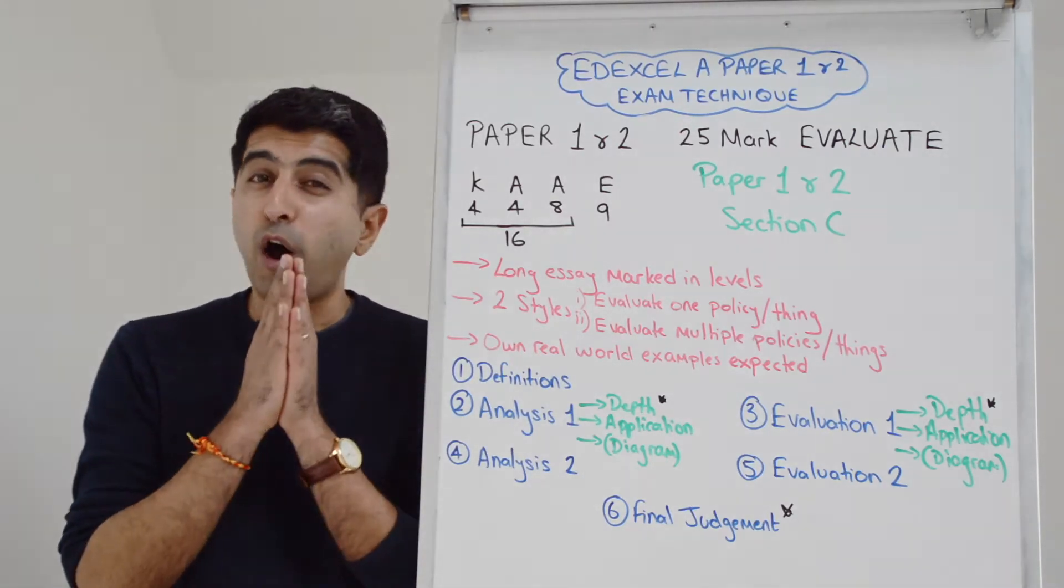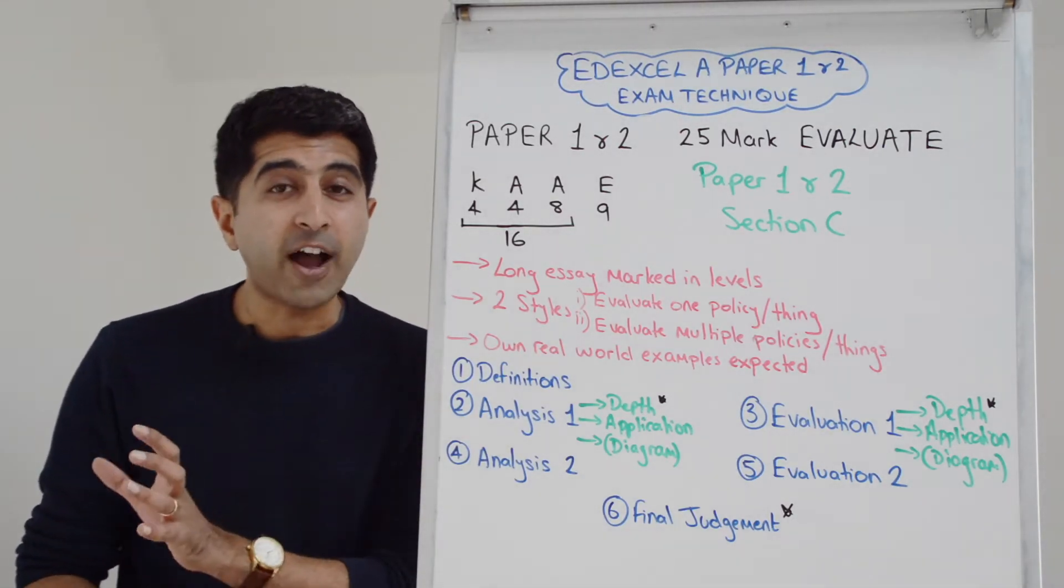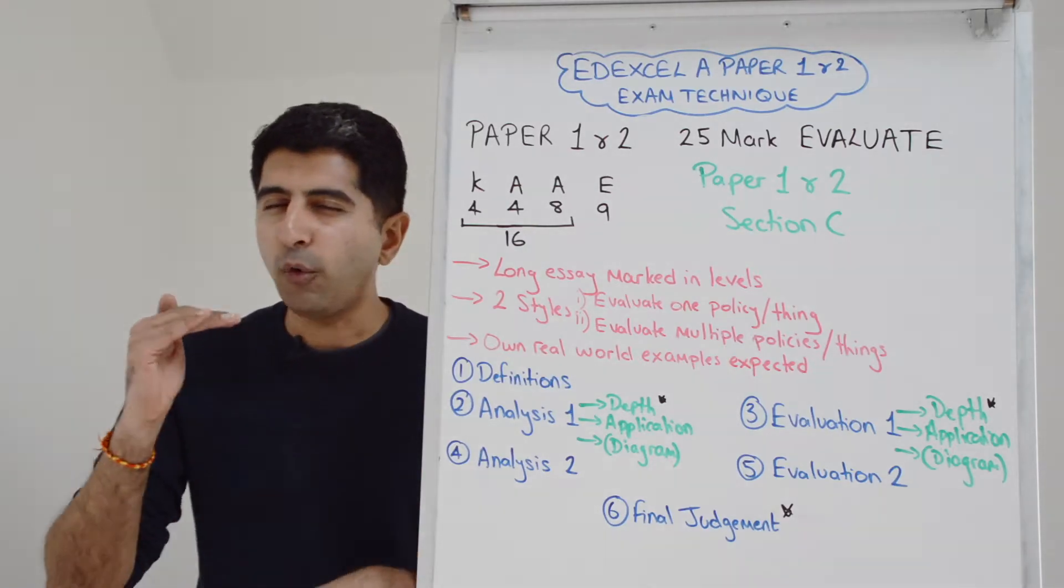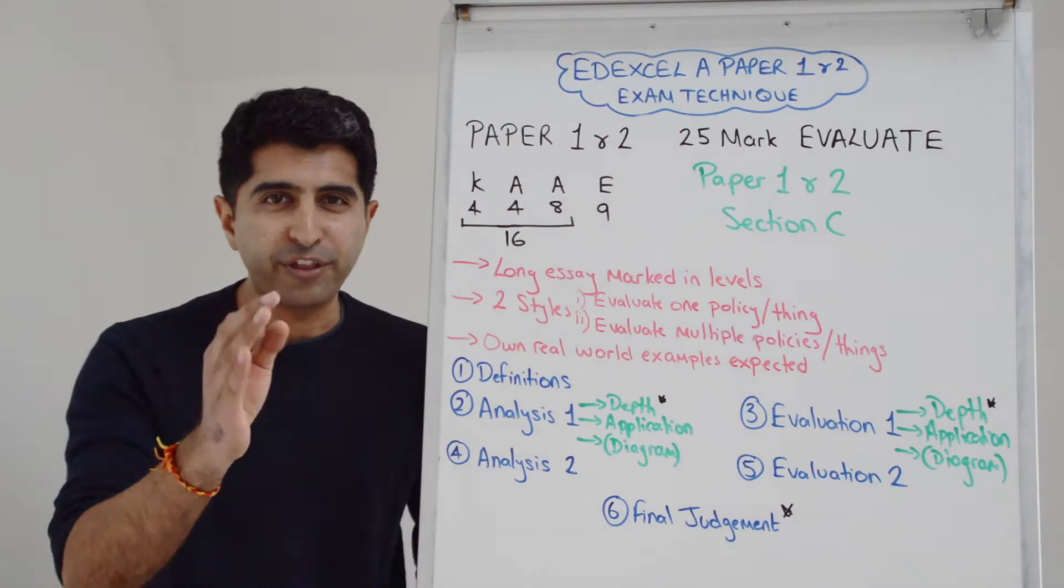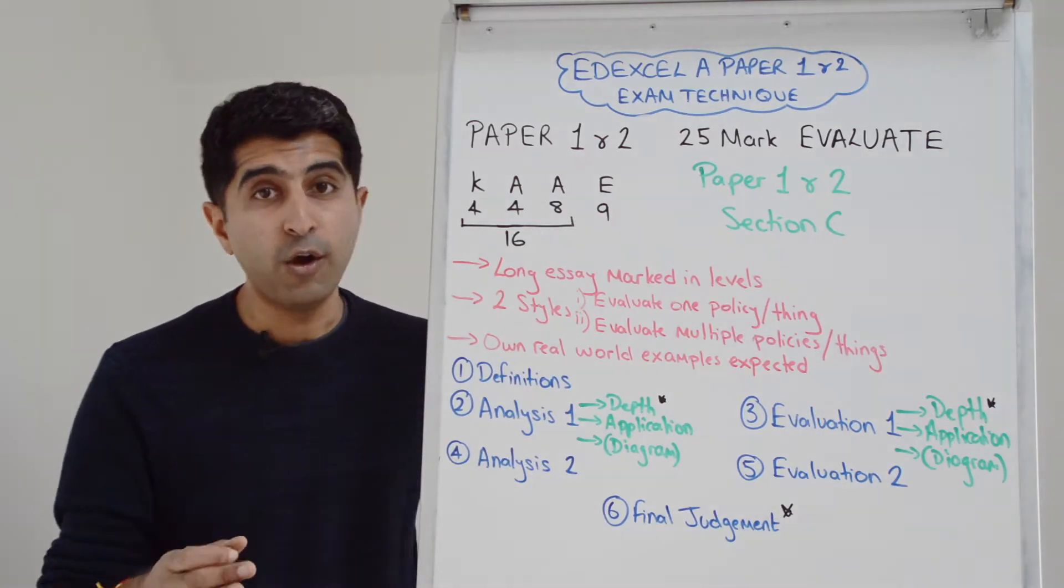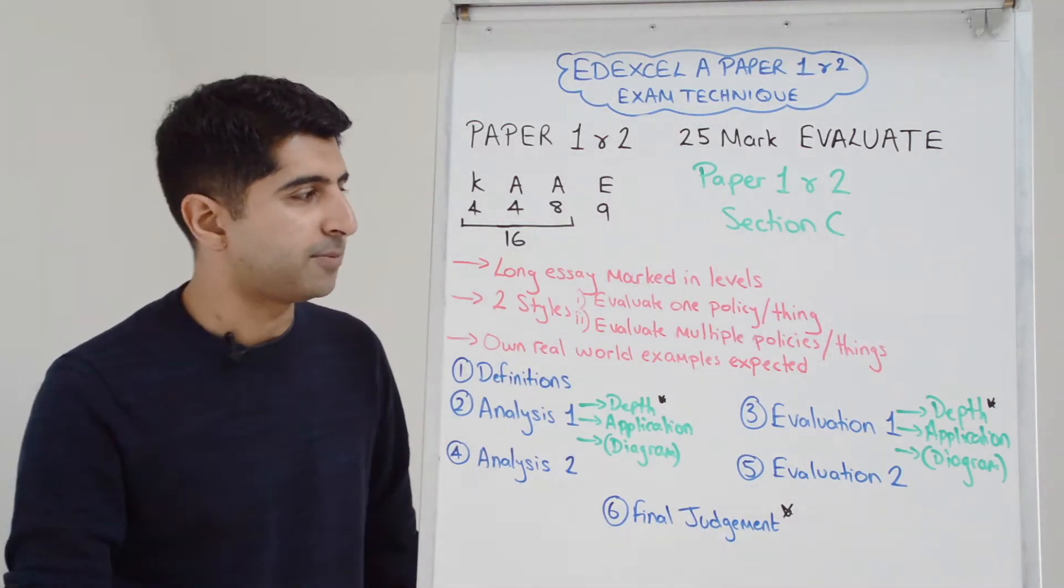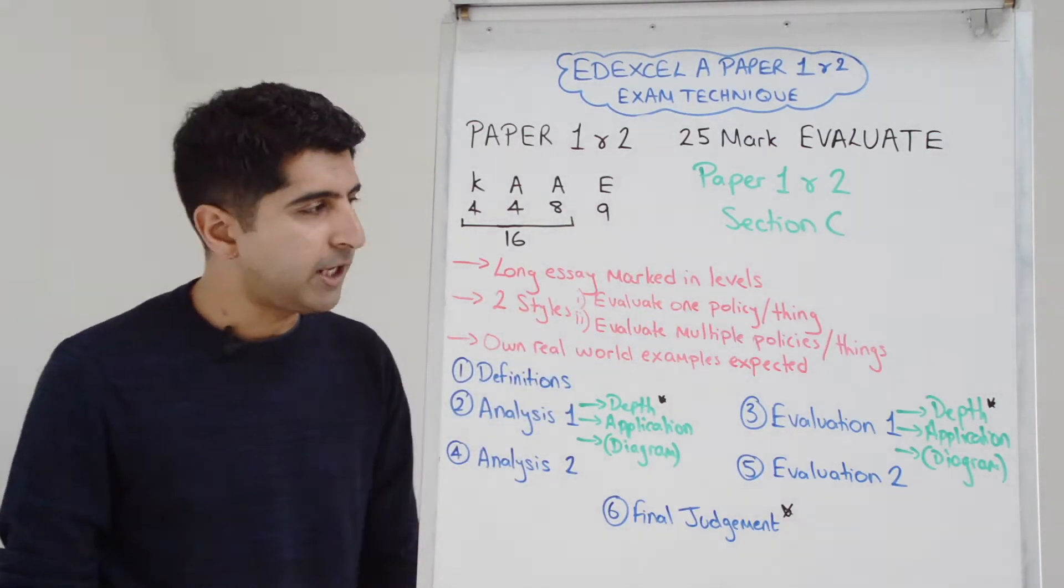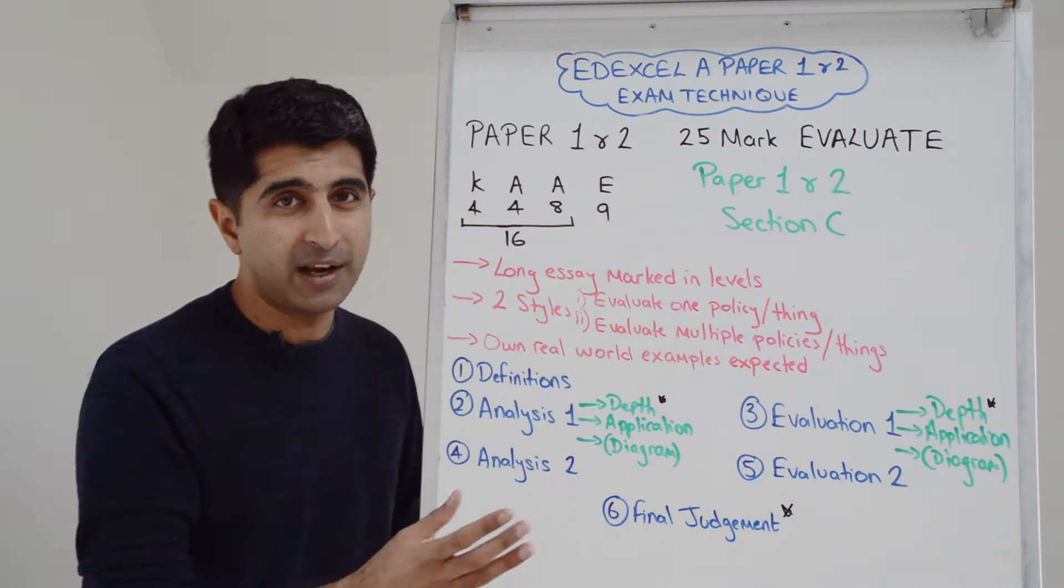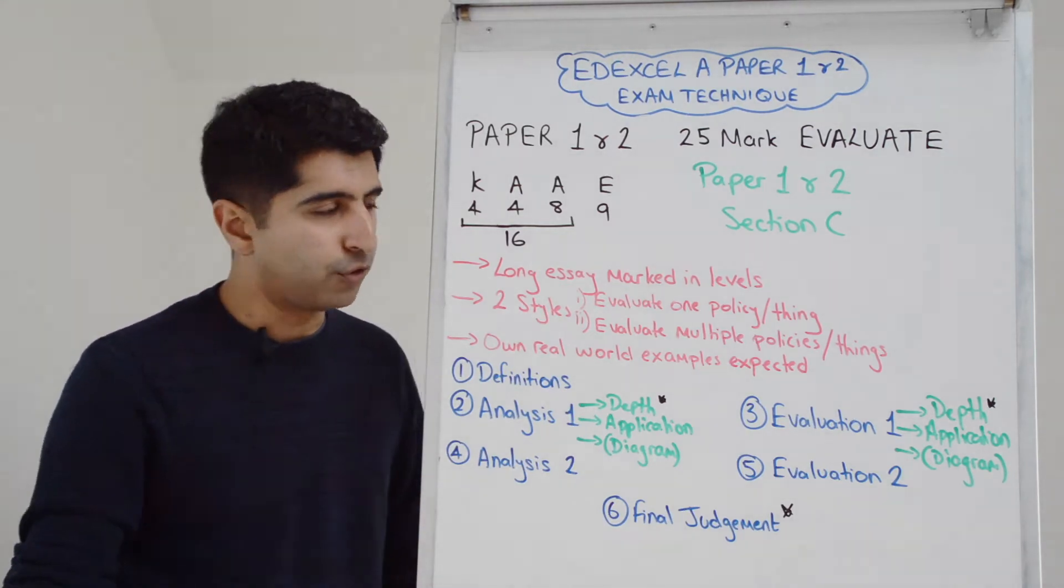In terms of timing, you're hopefully going to have 35 minutes to write this 25 mark. That's all about how your previous time management has gone. If it's gone really well, 35 minutes. Worst case scenario, no less than 30 minutes. It's a long essay, the longest one you're going to write, marked very much in levels. So depth of writing is crucial.